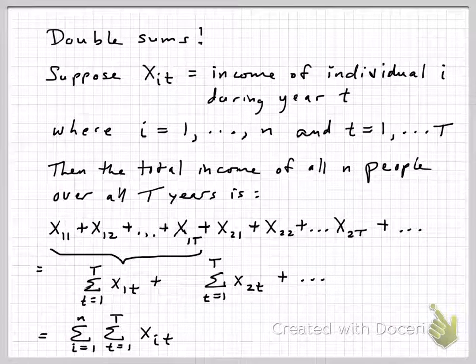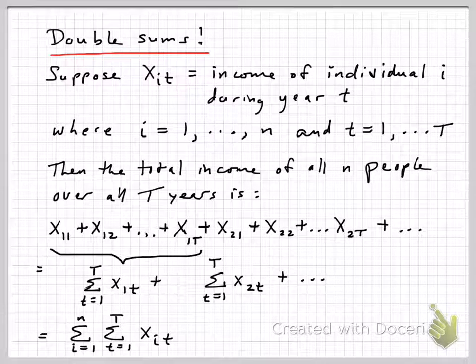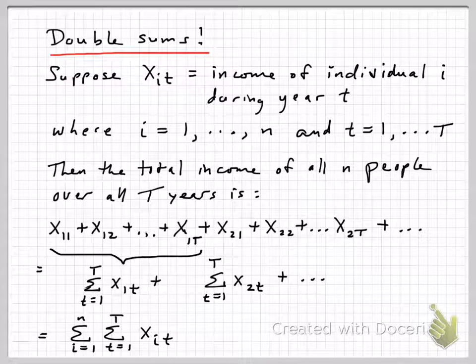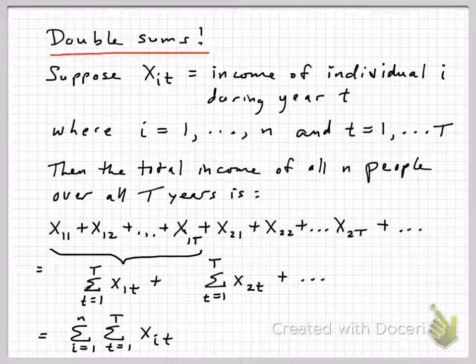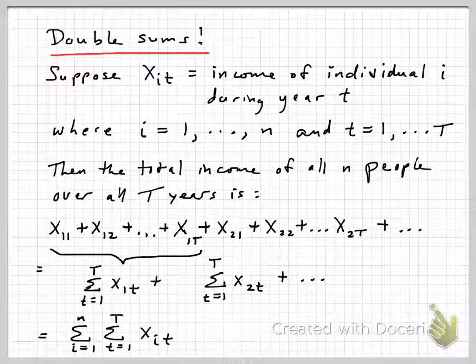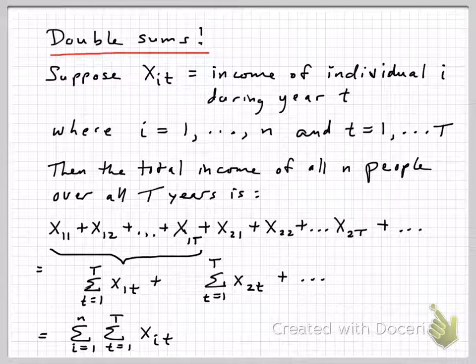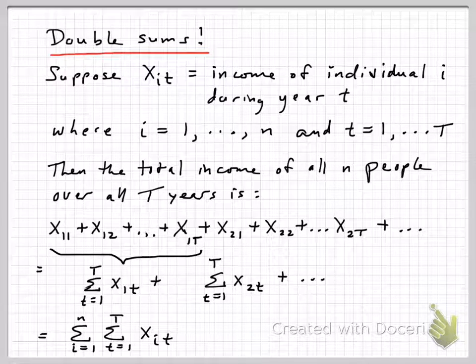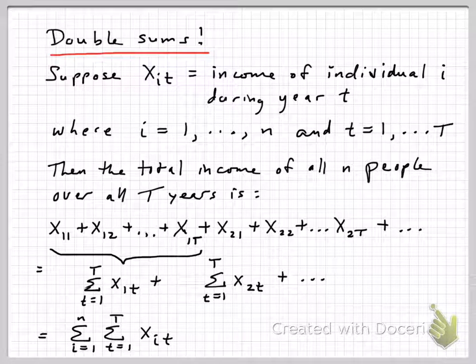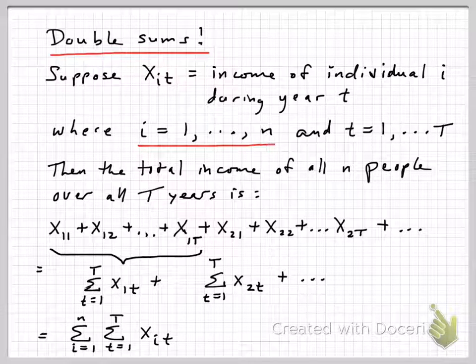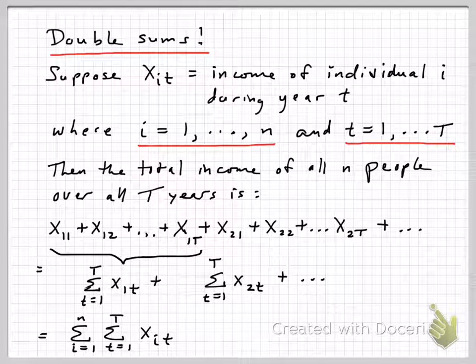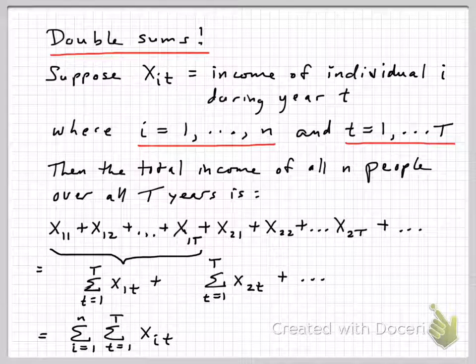All right, last point I want to make is double sums. So in a number of applications, you might end up with a couple of summations to capture a string of numbers being added together. So here would be an example. Suppose the variable xit, x sub it, is the income of individual i during some period of time. Let's call it during a year t. So we might have Bob's income during 1985, or Mary's income in 1991. And i goes from 1 up to n, and little t goes from 1 up to big T. So that would be some period of years, say from 1985 to 2015, something like that. Big T would be 2015 in that case.